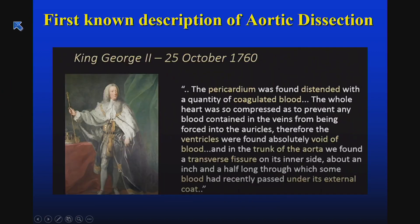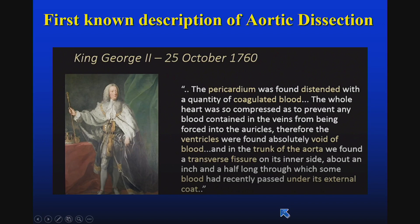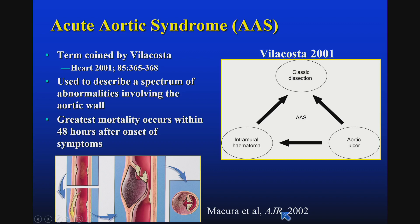The first known description of aortic dissection occurred many years ago in the diagnosis of King George II in 1760, when the pericardium was found distended and filled with coagulated blood, and there was a transverse fissure on the inner side of the aorta. This is what we now commonly recognize as an aortic dissection.